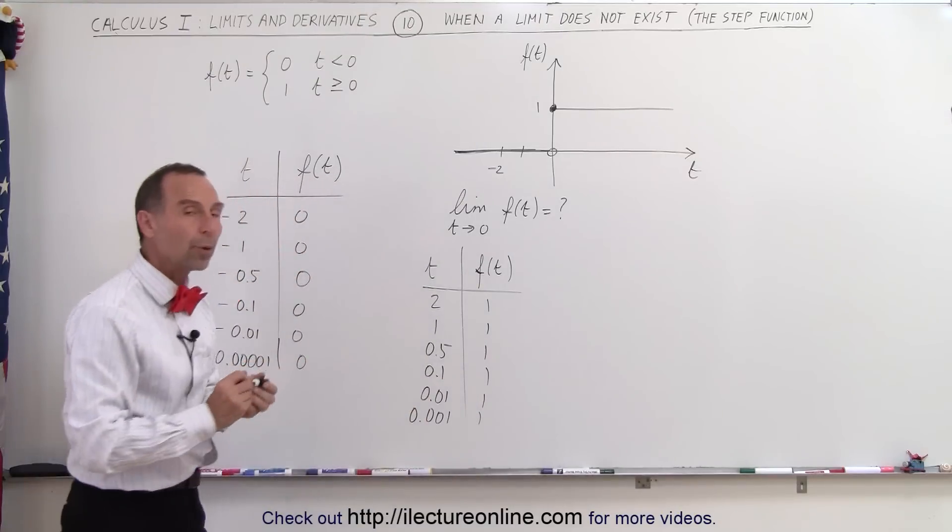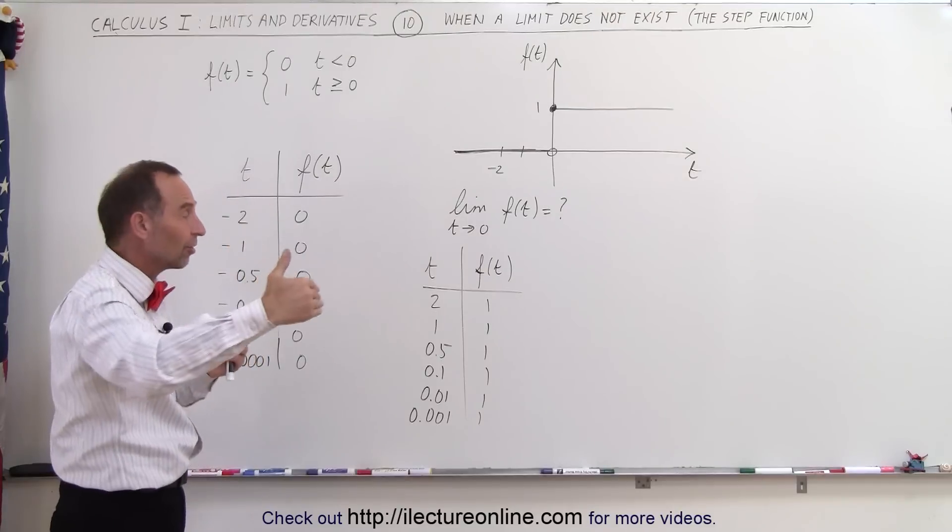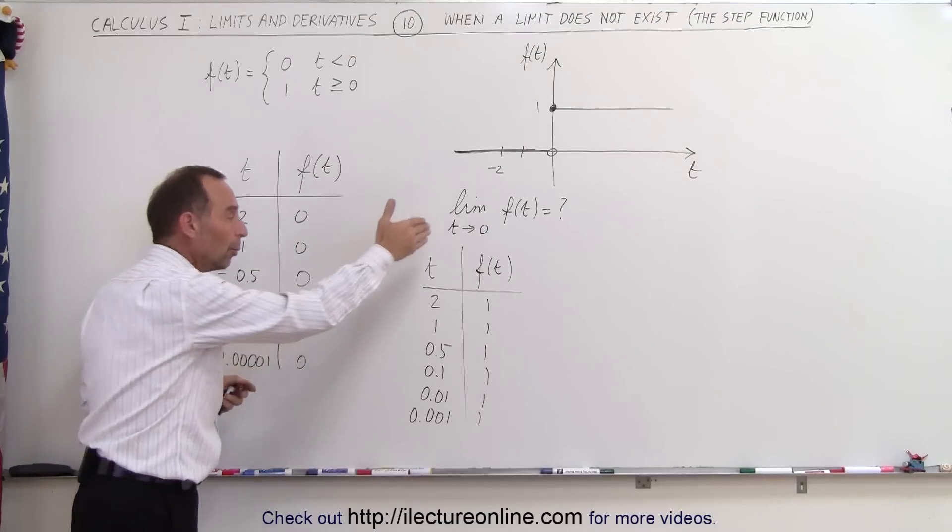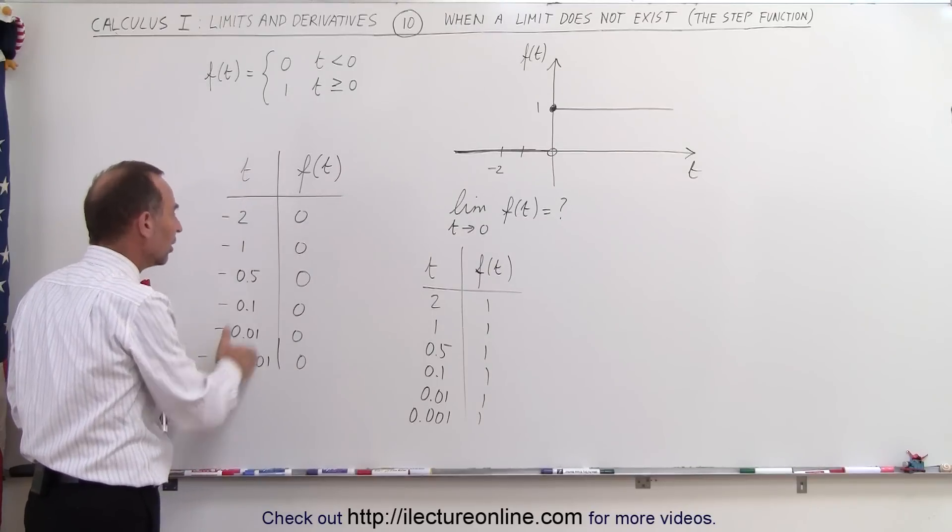And if we approach from the other direction, the negative direction, it appears to be 0. Notice when we approach the limiting value, in this case the limiting value is 0, as we approach 0 from the left, from the negative side, and we approach 0 from the right, the positive side.